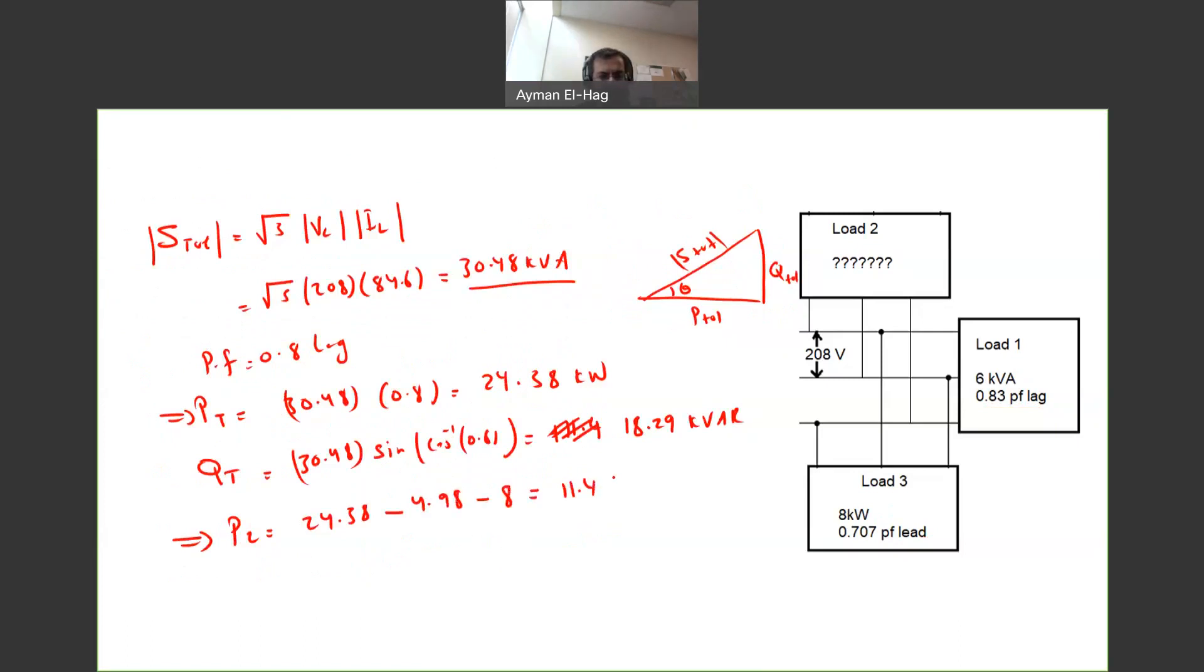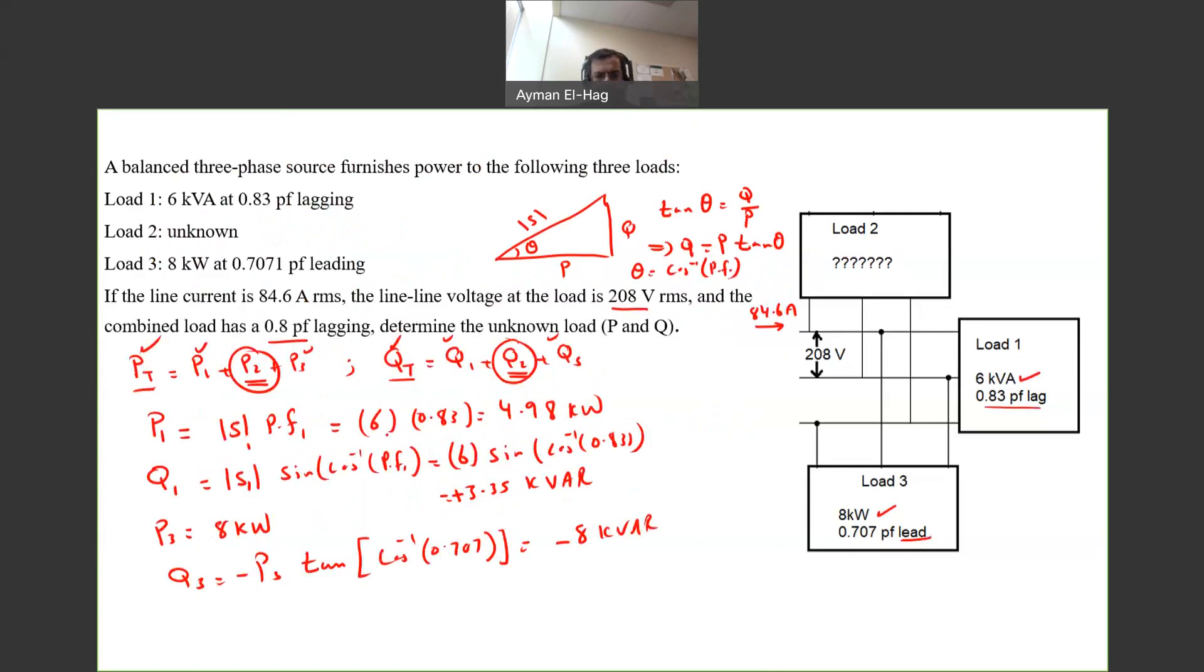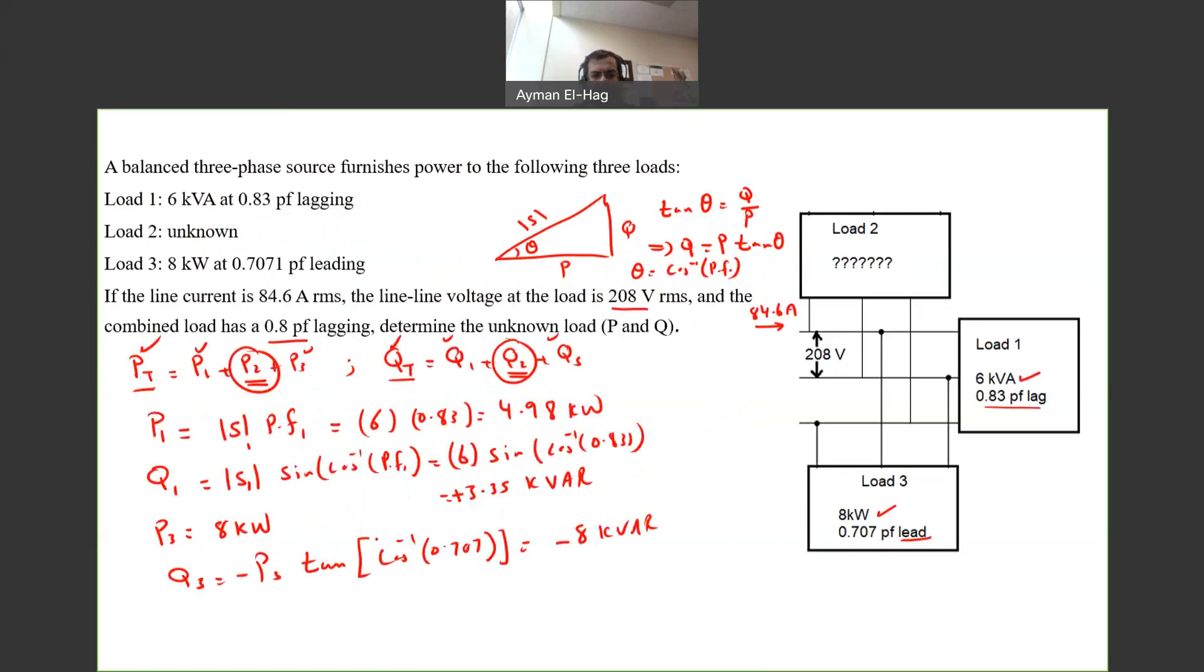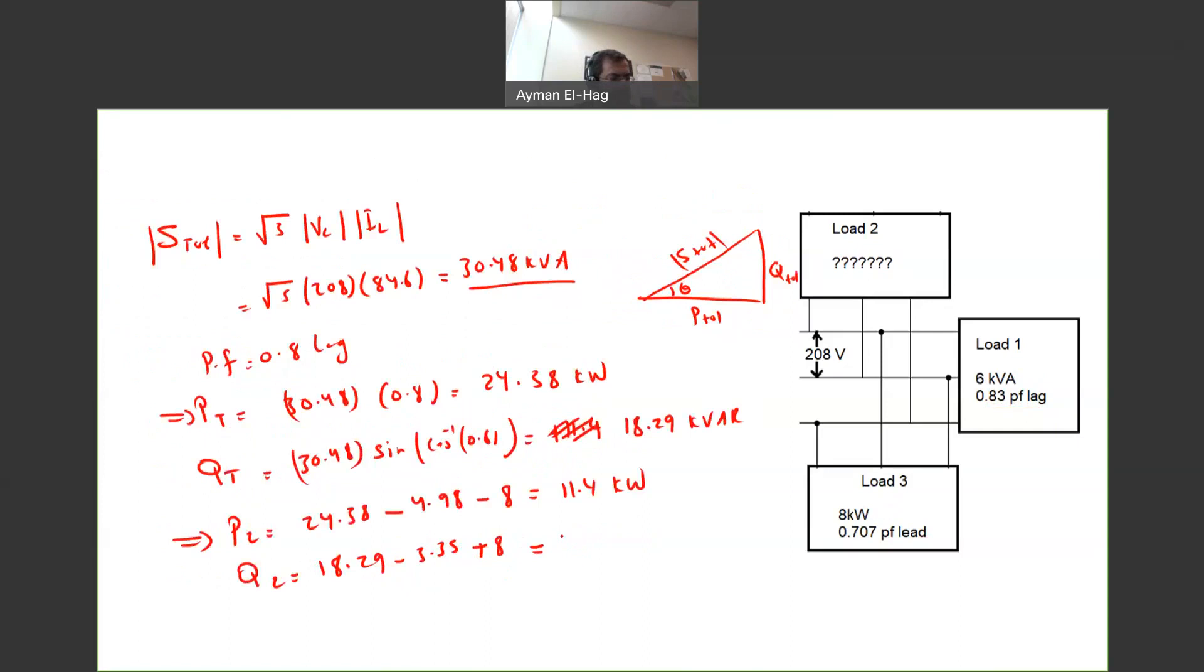This is 11.4 kW. And then your Q2 equals Q total minus Q1 minus Q3. So this equals 18.29 minus 3.35 plus 8. Because remember, the Q3 was negative, so now it becomes positive, and this gives me 22.91 kVAR. So that is your P2 and Q2.